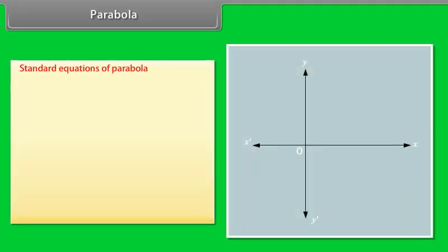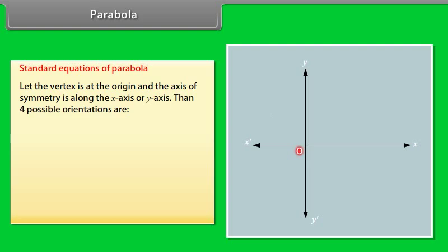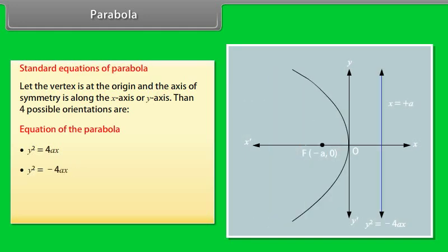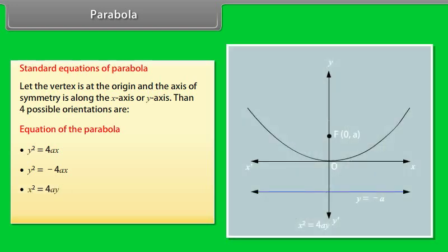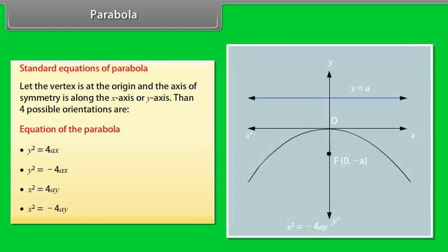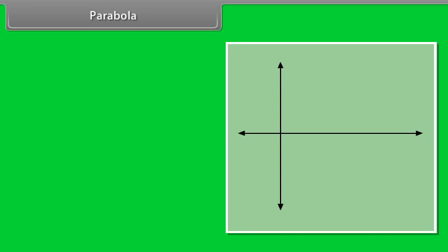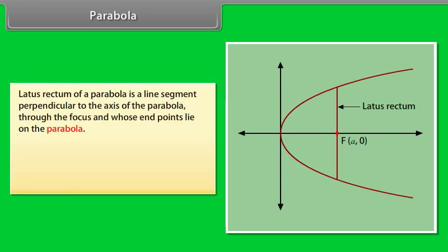Standard equations of a parabola: let the vertex be at the origin and the axis of symmetry along the x-axis or y-axis. The four possible orientations are: y² = 4ax, y² = −4ax, x² = 4ay, x² = −4ay. The latus rectum of a parabola is a line segment perpendicular to the axis of the parabola through the focus, whose endpoints lie on the parabola. The length of the latus rectum of y² = 4ax is 4a.